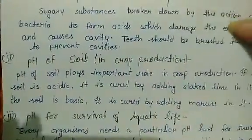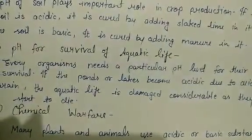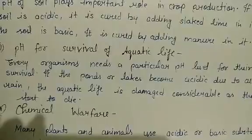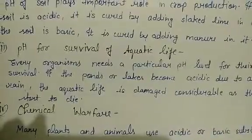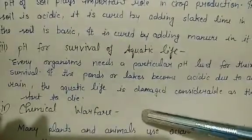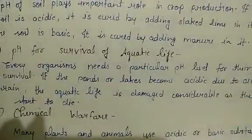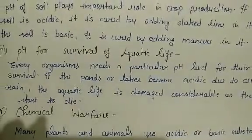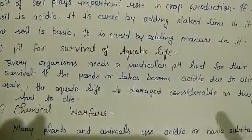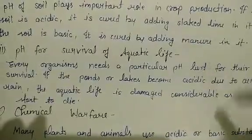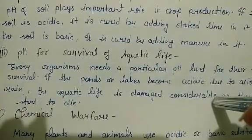Next is pH for the survival of aquatic life. Every organism needs a particular environment for survival, and any change in the environment causes difficulties. For aquatic life in freshwater resources such as ponds, rivers, or lakes, the aquatic organisms are adapted to a neutral pH level.